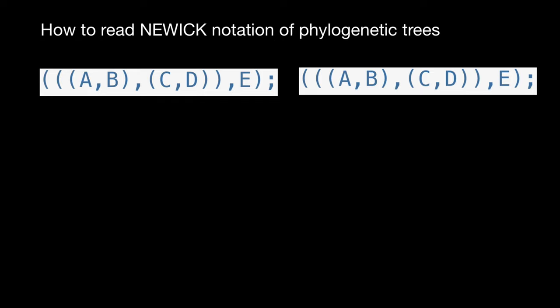So let's practice today and build a phylogenetic tree. As you see, we have species A and B separated by a comma. That means that we have a relationship as follows: species A, species B, and between these two sister taxa we have a node, which represents a recent common ancestor.